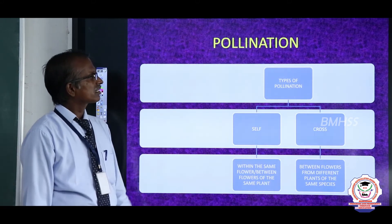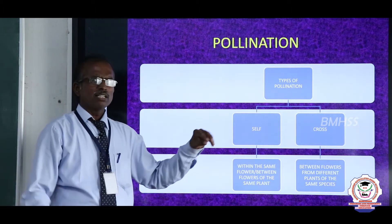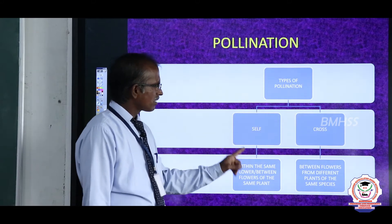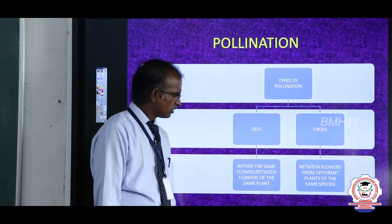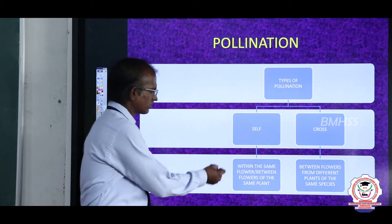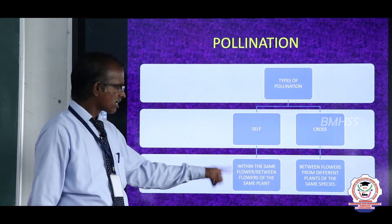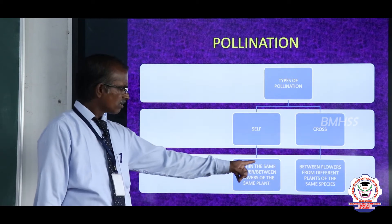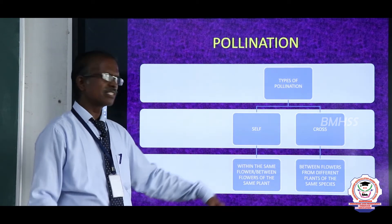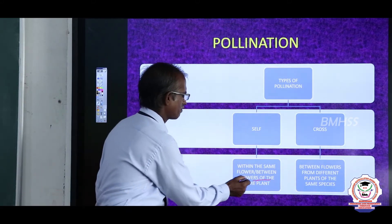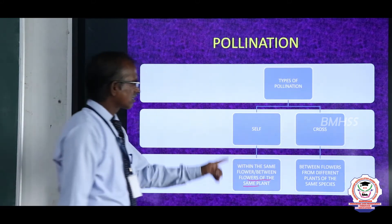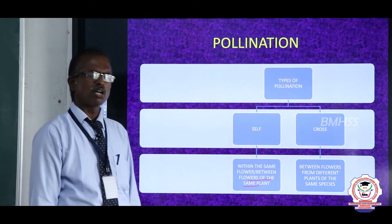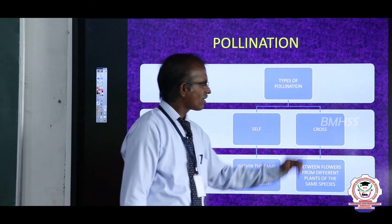There are two types of pollination: self-pollination and cross-pollination. What is meant by self-pollination? The transfer of pollen grain occurs within the same flower or between flowers of the same plant. This is called autogamy.